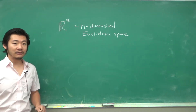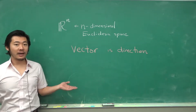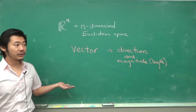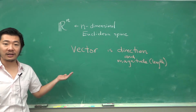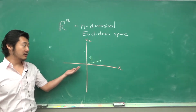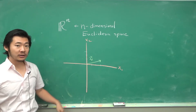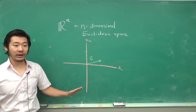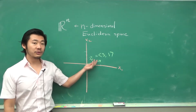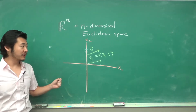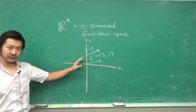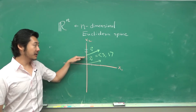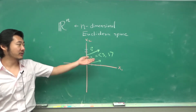Now recall that a vector is just a direction and magnitude, so it's not exactly points in Rn, but you can represent vectors as points in Rn. For example, this green two-dimensional vector going in this direction goes three units in the x1 direction and one unit in the x2 direction, so we can represent it as the two numbers 3 and 1.